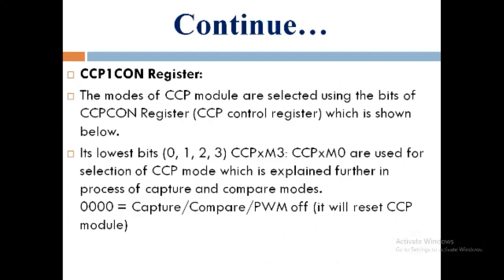The next register is the CCP1CON register. The modes of the CCP module are selected using the bits of the CCP CON register, that is the CCP control register, as shown below. Its lowest bits 0, 1, 2, 3 — called CCP1M3 to CCP1M0 — are used for selection of the CCP mode, which is explained further in the process of capture and compare modes. A value of 4'b0000 will reset the CCP module.